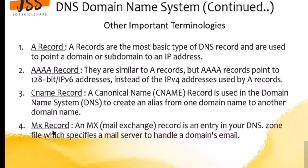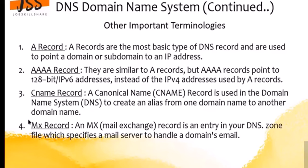Last but not least is the MX record — the Mail Exchange record. This is an entry in your DNS zone file which specifies the mail server to handle a domain name. In a Windows environment, in your server you will hard-code the IP address of your mail exchange server using the MX record. This way, host machines looking to exchange emails know where to go — that's the reason we use MX records.